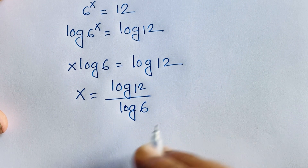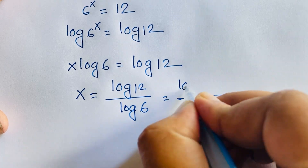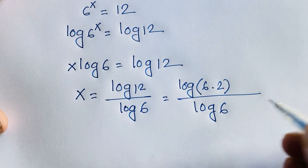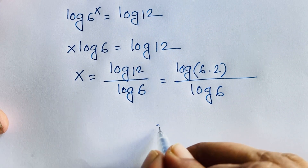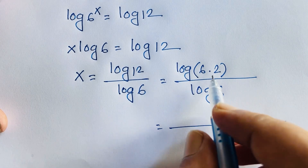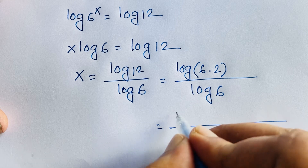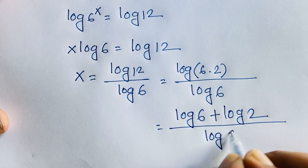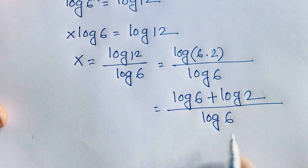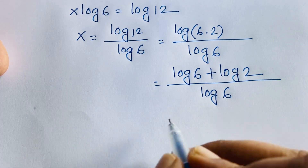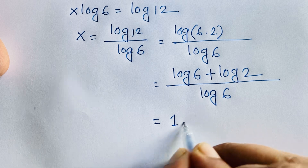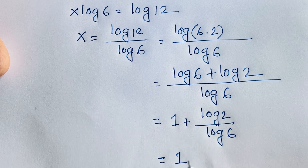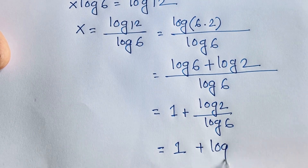Now I can say log 12 equals log(6 times 2), and here is log 6. Using the logarithm rule — log(ab) equals log a plus log b — I can say it will be log 6 plus log 2 over log 6. Now dividing both terms by log 6, we get log 6 over log 6 which is 1, plus log 2 over log 6.